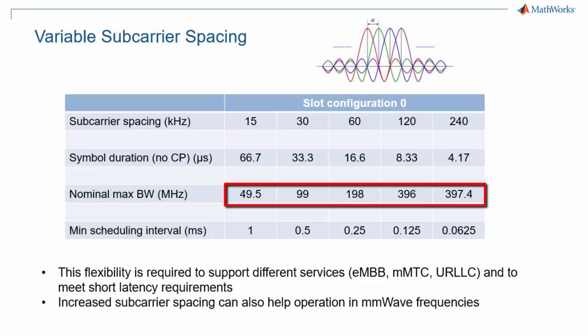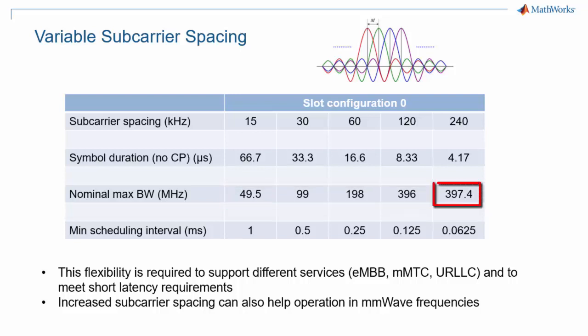The maximum supported bandwidth is 50 MHz at 15 kHz spacing, and it doubles each time to reach 100, 200, and 400 MHz at 120 kHz spacing. For the higher subcarrier spacing of 240 kHz, the number of supported subcarriers is halved, which means that the bandwidth is still 400 MHz. The advantages of having different subcarrier spacings include increased bandwidth and, at the same time, shorter transmission time for an OFDM symbol, therefore enabling shorter latencies at the physical layer.